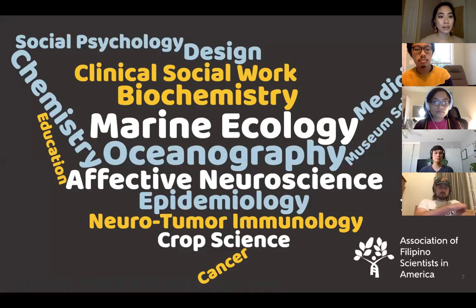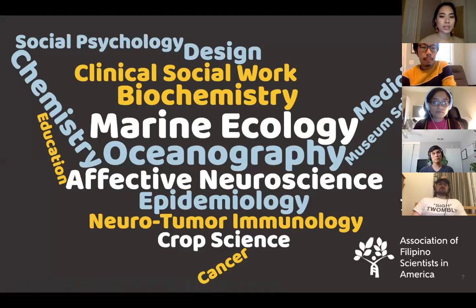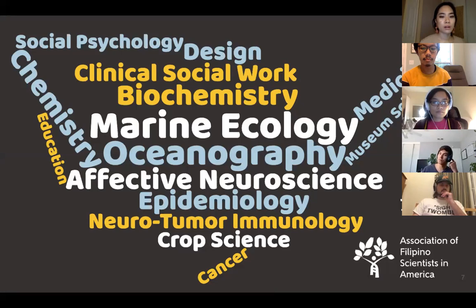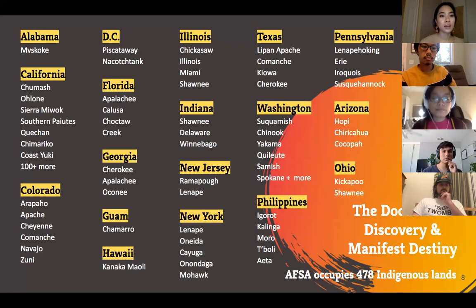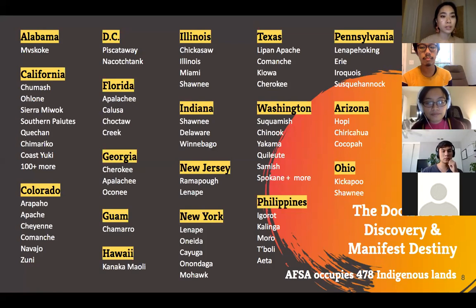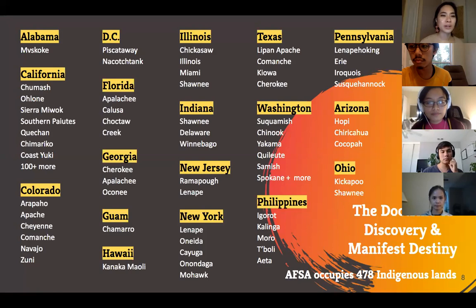Here we are as Filipinx scientists and APSA — the Association for Filipino Scientists in America. APSA was just formed one year ago and already we have 72 different scientific fields represented, from marine biology, epidemiology, biochemistry, and education. The question is: whose land are we on when we do our scholarship, our experiments, our fellowships? In preparation for this workshop, I found that APSA's members occupy roughly 470 indigenous lands in North America, Guam, the Philippines, and Australia.